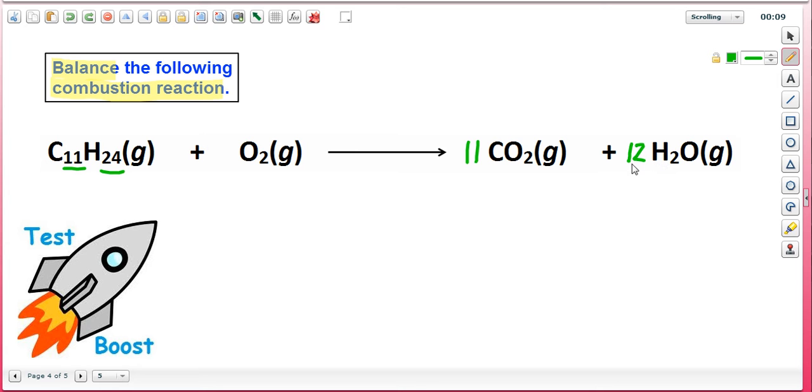Now, carbon and hydrogen have been balanced, but clearly, oxygen has not been balanced yet, since there are 22 oxygen atoms from carbon dioxide and 12 from water, but there are not the same number of oxygen atoms on the reactant side.